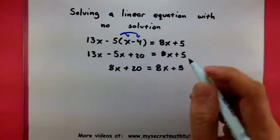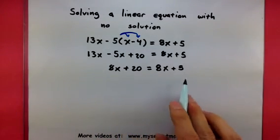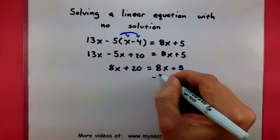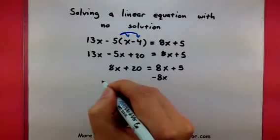And let's see, I got an x on the left side of the equal sign, some x's on the right. Let's combine these by subtracting an 8x from both sides.